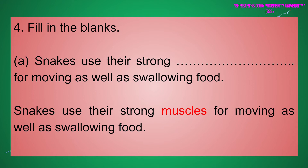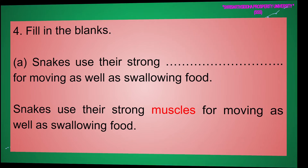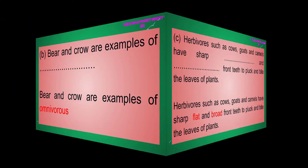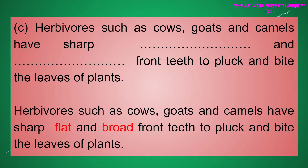Four: Fill in the blanks. (a) Snakes use their strong muscles for moving as well as swallowing food. (b) Bear and crow are examples of omnivores. (c) Herbivores such as cows, goats, and camels have sharp, flat and broad front teeth to pluck and bite the leaves of plants.